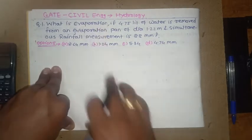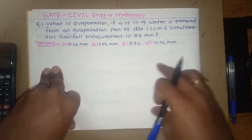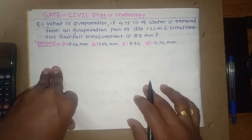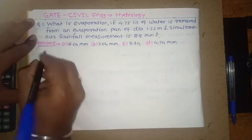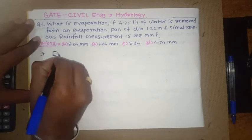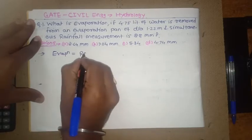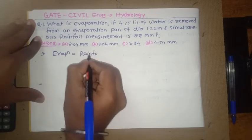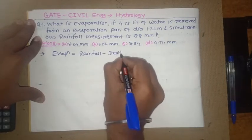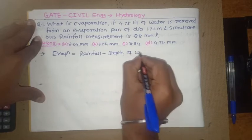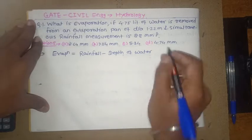For this we have to use one basic formula or basic concept that evaporation is equal to rainfall minus depth of water removed from the pan.